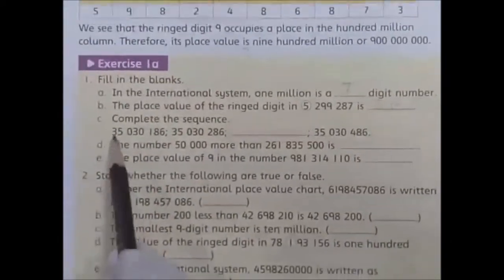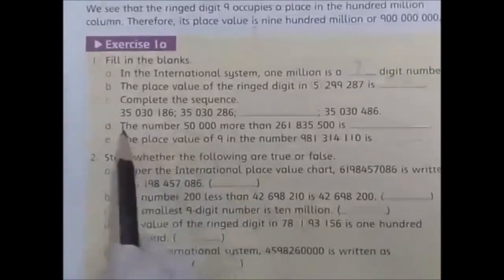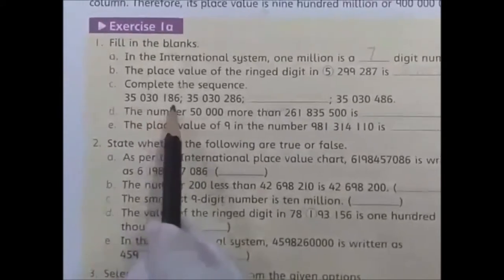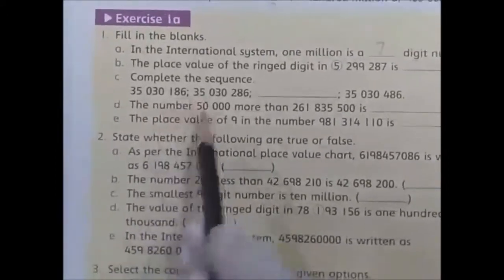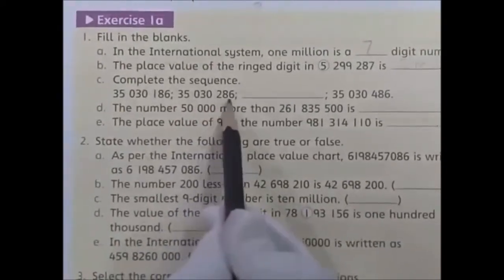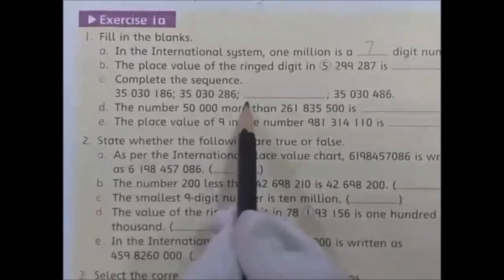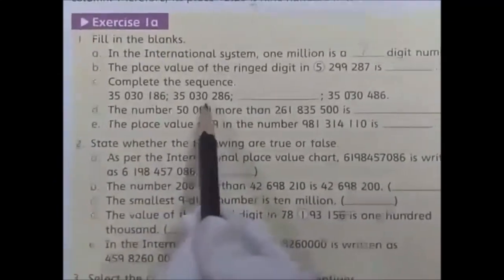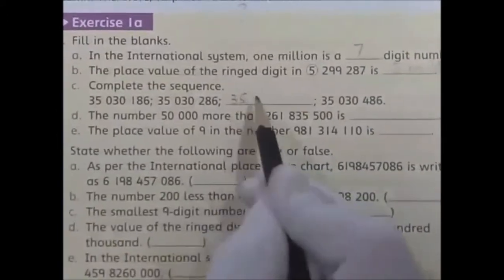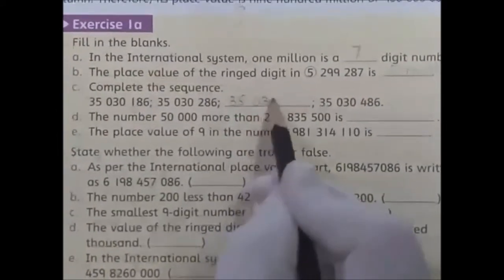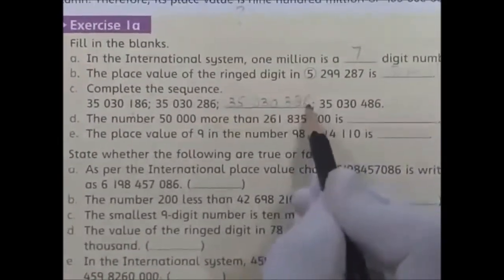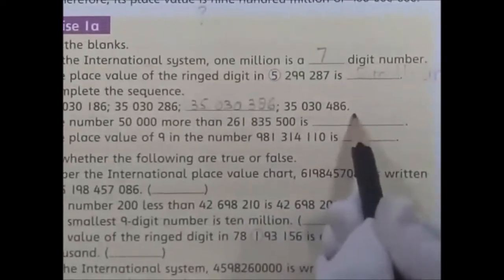Now, complete the sequence. The number is 35,030,186. The next number is 35,030,286 — increasing by 100. We increase 100 and write: 3, 5, 0, 3, 0 — and 2 becomes 3, making 35,030,386. Another one ends in 486.